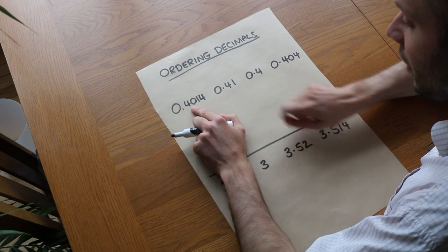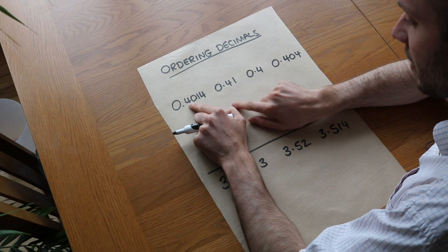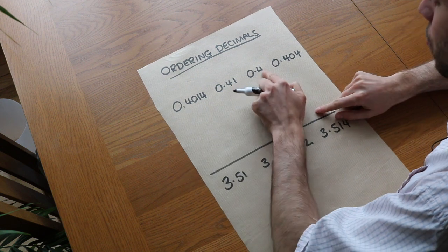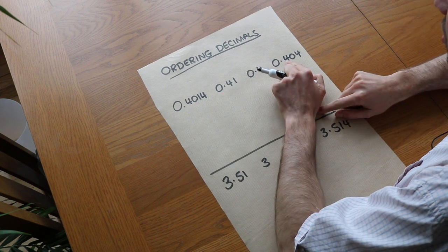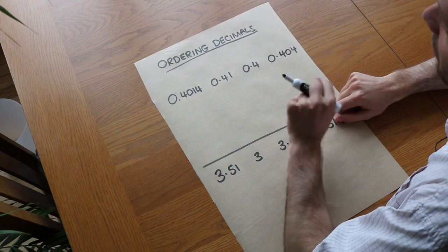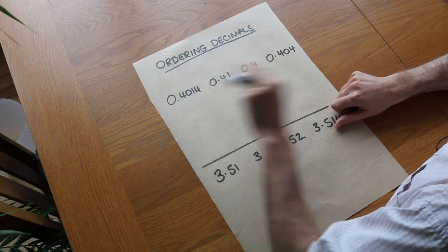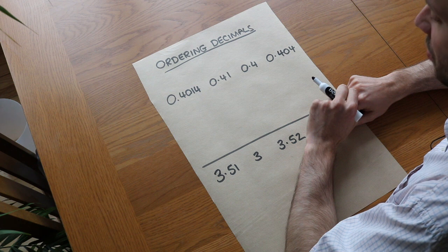So then we look at the tenth digit. We can see the tenth digit here is 4, tenth digit is 4, tenth digit is 4, tenth digit is 4. Again the tenth digit is the same for all the four numbers so we can't tell which one is bigger.